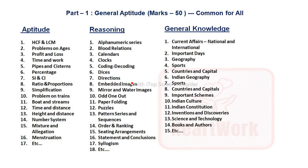Part 1 is General Aptitude, which is common for all posts — Engineering Assistant Trainee, Junior Assistant, and Technician C — everyone. In this General Aptitude section it will cover aptitude questions, reasoning questions, and general knowledge questions. These 50 questions will be mixed type, not separated by subject — some from aptitude, some from reasoning, some from general knowledge.